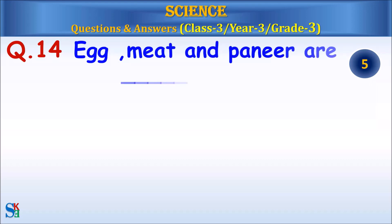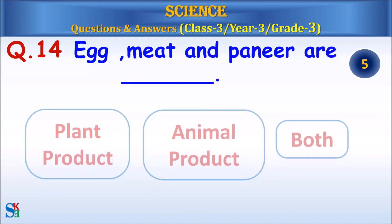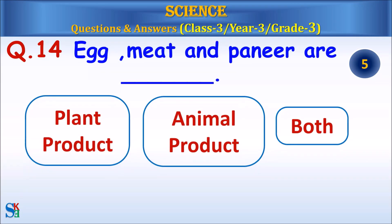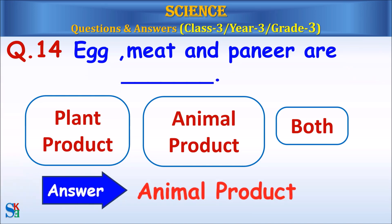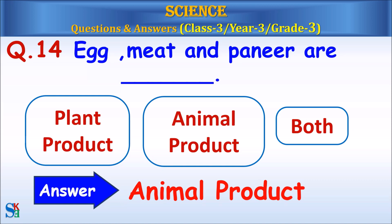Question 14: Egg, meat, and paneer are plant product, animal product, or both? Answer: Animal product.